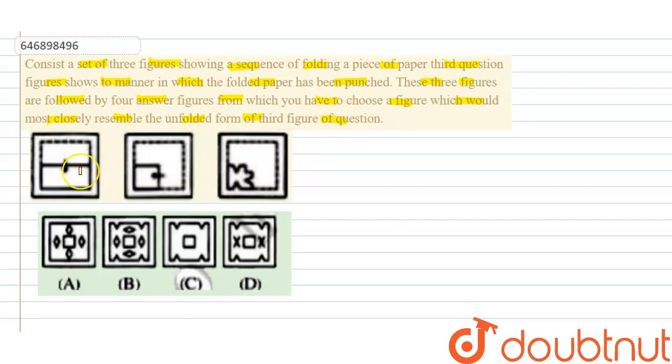We have three figures given. A square paper was two times folded and punched and cut.